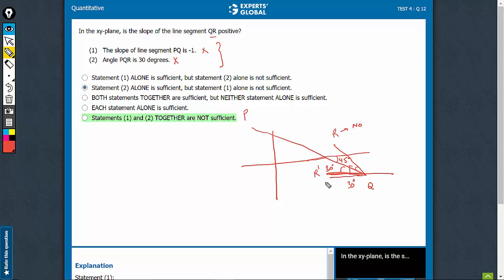So if the slope of QR positive, you once again get no as an answer. Either way, you're getting no as an answer. Combining, we are able to get to a unique answer that no, the slope of line segment QR is not positive and therefore, combining works and option C is the right answer choice.